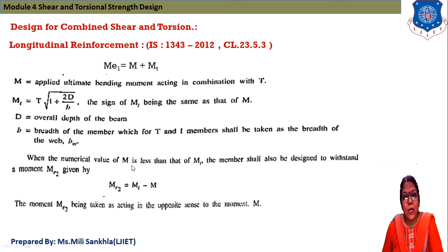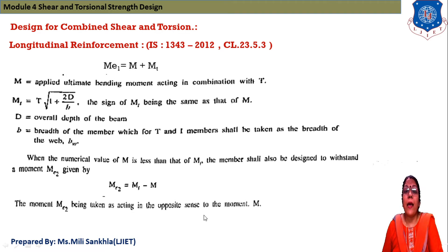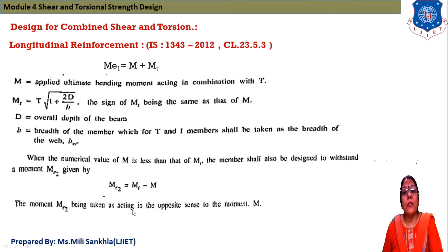When the ultimate moment M is less than MT, the member shall also be designed to withstand a moment ME2, given by ME2 = MT - M. The moment ME2 is taken as acting in the opposite direction to the moment M, meaning it will be the resisting moment of our prestressed concrete member.